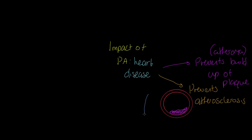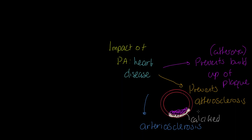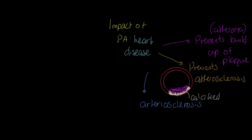Exercise doesn't just prevent atherosclerosis — it also prevents arteriosclerosis. Arteriosclerosis is the hardening of the vessel itself, where the vessel actually calcifies. The smooth muscle on the outside becomes far less able to move, so we get a hardening process where arteries are less capable of maintaining their vasomotor tone and dilating and constricting.